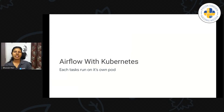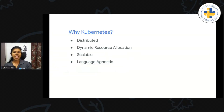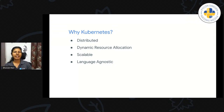That brings us to the actual distributed component of Airflow with Kubernetes. The whole idea is each task will have its own pod to run, making it a completely delegated and distributed structure. Why do we need Kubernetes? One is the distributed part we talked about. The second is dynamic resource allocation — each task can have its own amount of CPU and memory defined. And it's scalable — you can scale the cluster, have multiple nodes and multiple tasks running. If you have 100 DAGs and need to scale them up, it's just a matter of running more pods and shrinking them down when you don't need them.